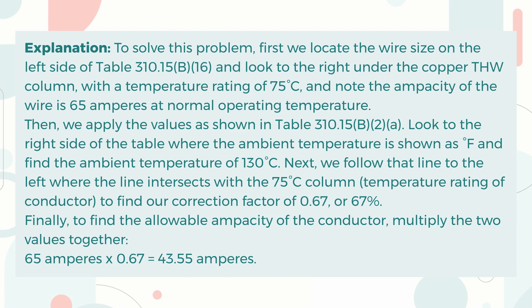Then, we apply the values as shown in Table 310.15(B)(2)(a). Look to the right side of the table where the ambient temperature is shown in degrees Fahrenheit, and find the ambient temperature of 130 degrees Fahrenheit. Next, we follow that line to the left, where the line intersects with the 75 degrees Celsius column — the temperature rating of the conductor — to find our correction factor of 0.67, or 67%. Finally, to find the allowable ampacity of the conductor, multiply the two values together and get the answer of 43.55 Amperes.